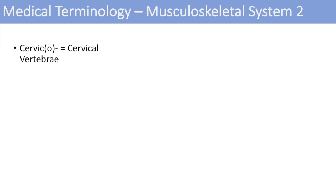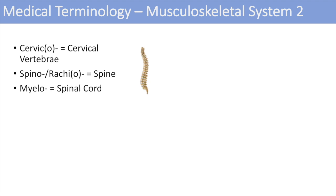The next one is spinal or rachio, which means the spine. The next one is myelo, which means the spinal cord. You can think of conditions like transverse myelitis, which is an infection of the spinal cord that can lead to certain types of symptoms. So transverse myelitis — myelo means spinal cord, and myelitis means inflammation of the spinal cord.